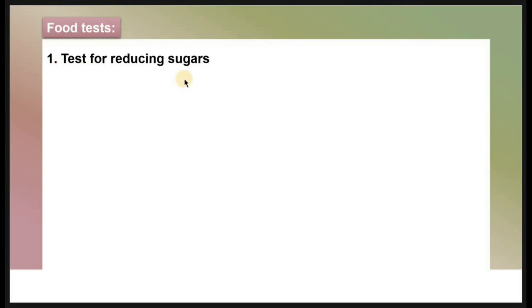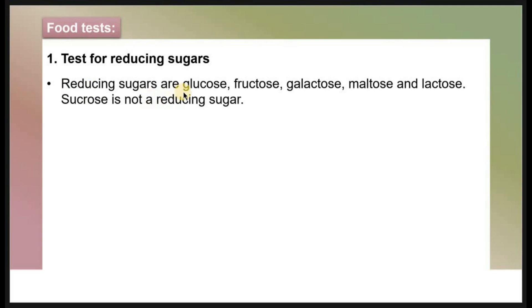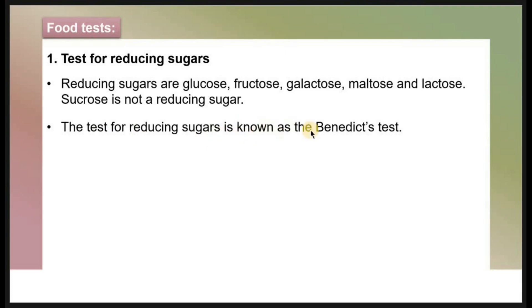Today we'll be looking at food tests. We'll start with testing for reducing sugars, which is one of the food tests you come across when doing biology practicals — it's very common. So what are reducing sugars? Reducing sugars are glucose, fructose, galactose, maltose, and lactose. Sucrose is not a reducing sugar. The test for reducing sugars is known as the Benedict's test.